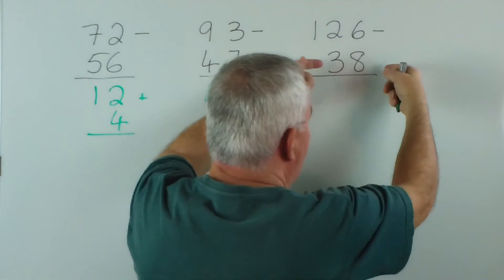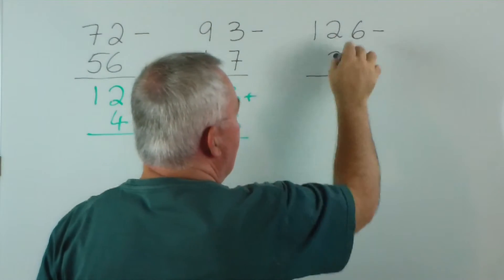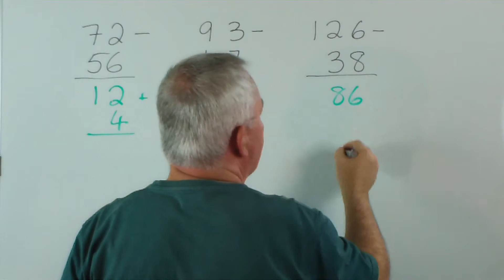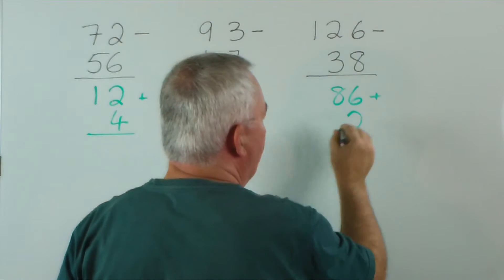This one we would round up to 40. 126 minus 40 is 86. And we would add on the 2 afterwards.